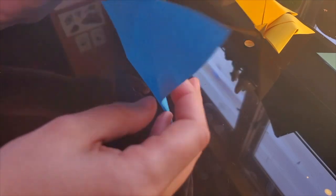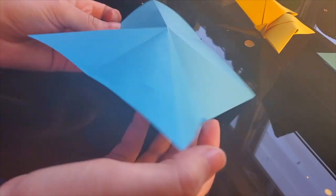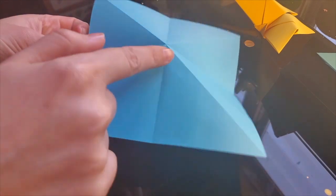With the edge-to-edge folds creating valleys where the paper is angled towards you, push the side creases in on themselves until you have a triangle.